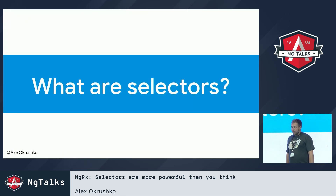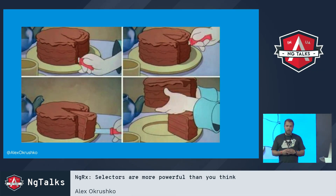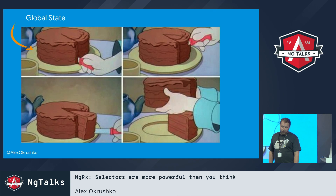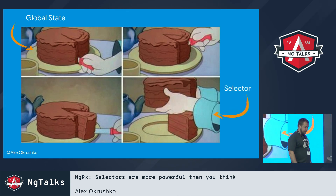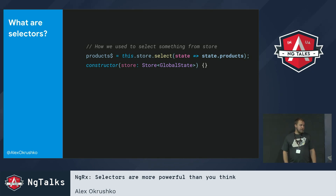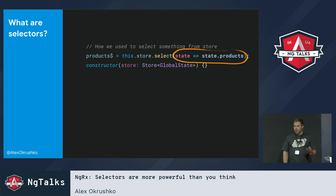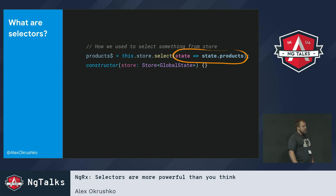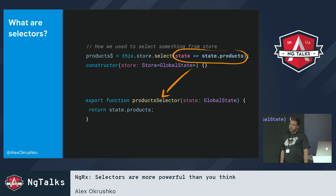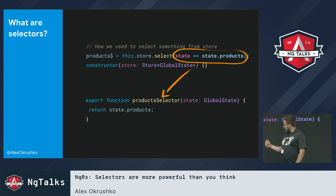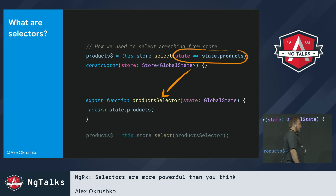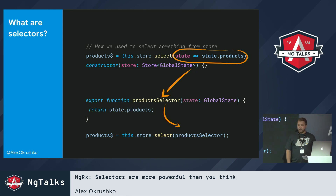So what are selectors? Selectors are functions that describe how we take a slice of global state and provide them to the components. For example, we have a store that has a method select, and we provide a function — in this case it's an arrow function. That arrow function would sometimes be pulled out into a different function, here's a product selector, and then we'd use it in our store select. These functions, the product selector, these are called selectors.